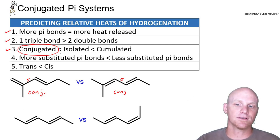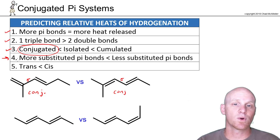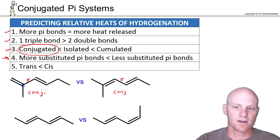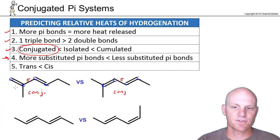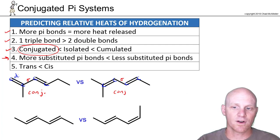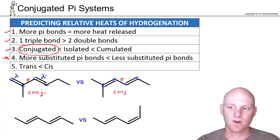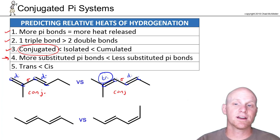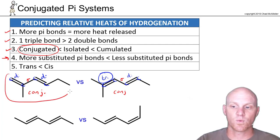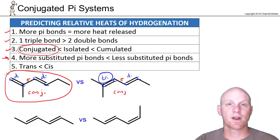The more substituted alkene is the more stable alkene. Looking at the sp2 carbons: the first compound has two H's and two carbons on the alkene, making it a di-substituted alkene. Another is also di-substituted. But one has two carbons on one side and one carbon on the other — that's a tri-substituted alkene — while the other has one carbon and two hydrogens, making it di-substituted. The more substituted alkene is more stable and therefore releases less energy. So the less-substituted one is higher energy and will release more energy when hydrogenated.